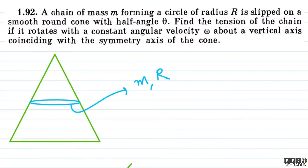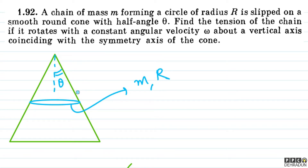So let's go. Basically, a chain of mass M and radius capital R is placed on a smooth round cone where the half angle is theta. Half angle means the angle between the axis and the slant surface. This is a vertical axis, and the cone rotates about it with a constant angular velocity.